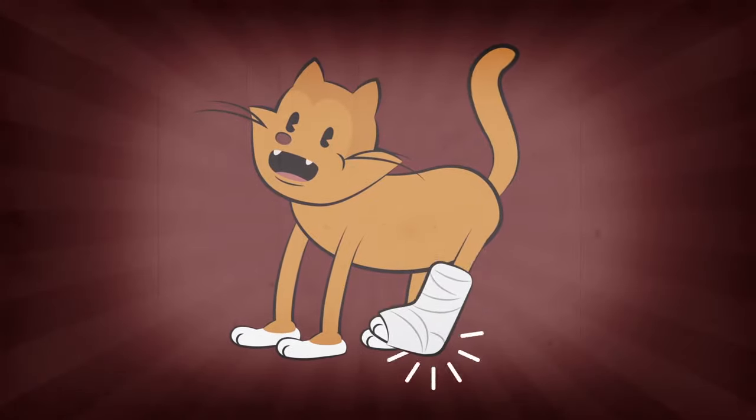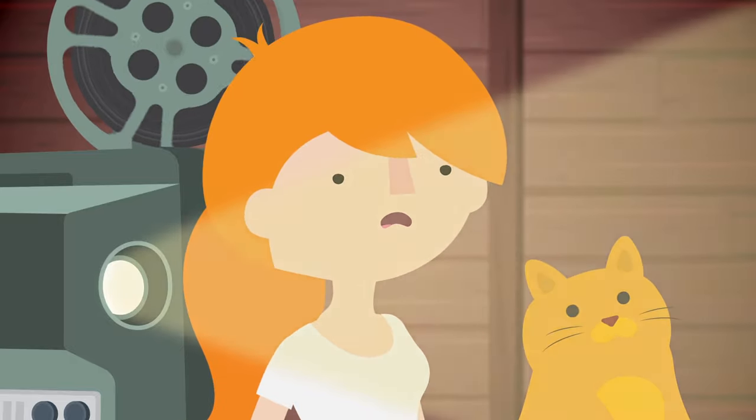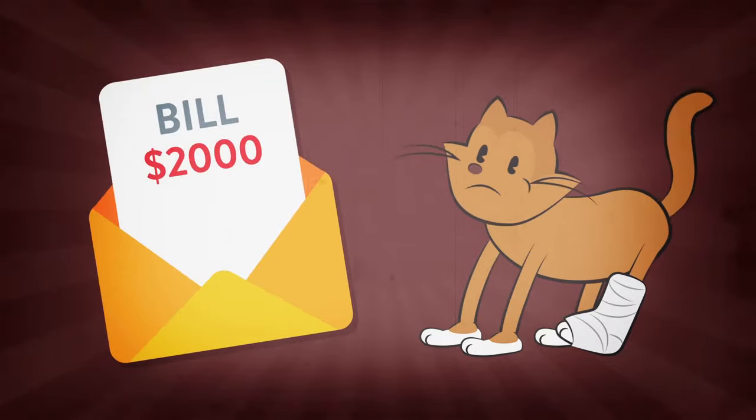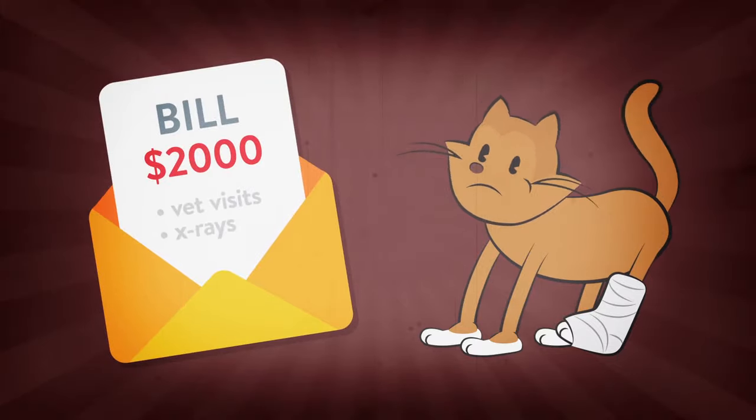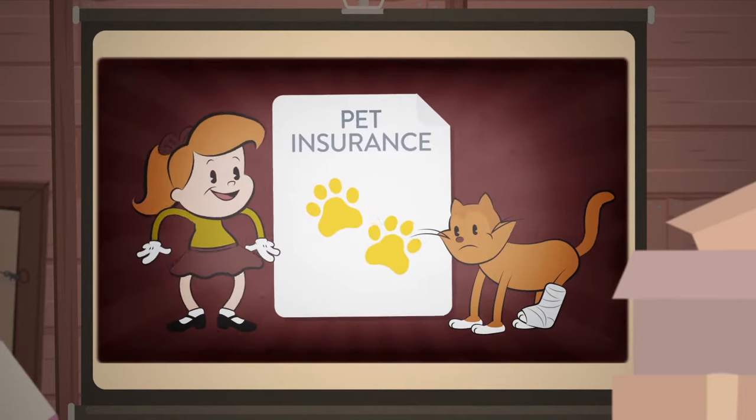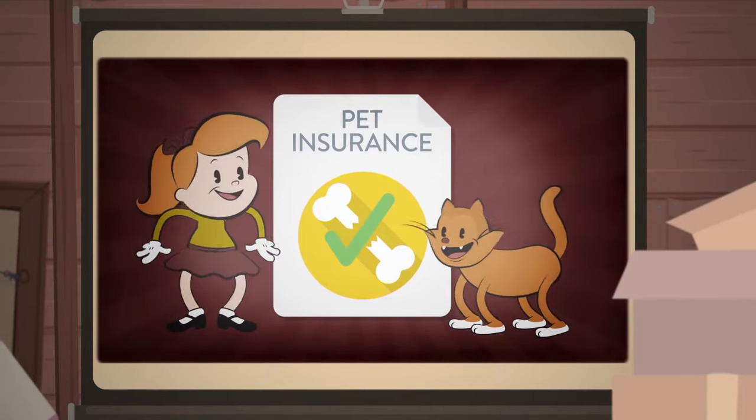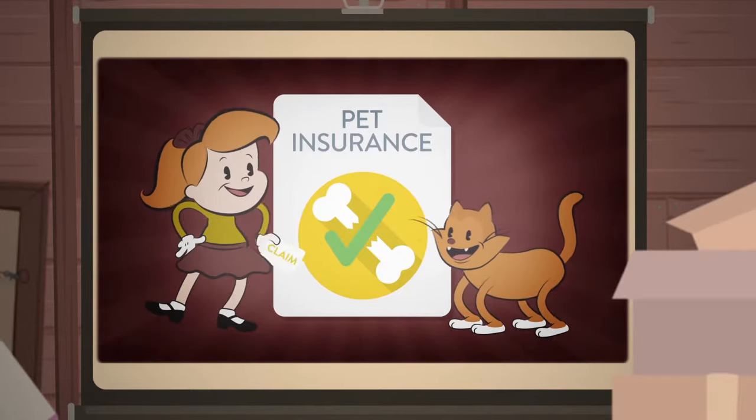But what's this? Calamity. Little Jenny's cat has broken its leg during hockey practice, racking up $2,000 in vet visits, x-rays, and tiny cat crutches. Thankfully, Little Jenny's pet insurance policy covers broken bones and reimburses her for the medical expenses after she files a claim.